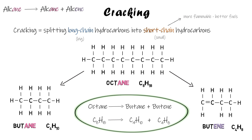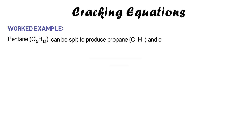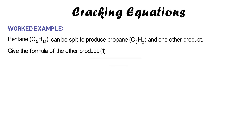In the exam you might need to complete a formula. Here's an example: they might ask you to identify the formula of a missing product. We have pentane, C5H12, splitting up to produce propane, C3H8, and one other product — you need to give the formula of that other product. This is usually a one-mark question.